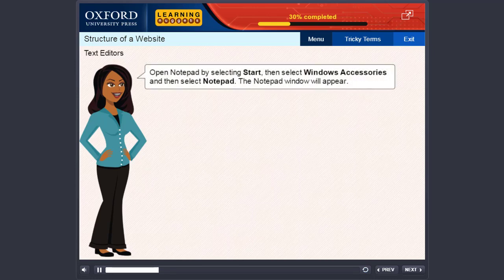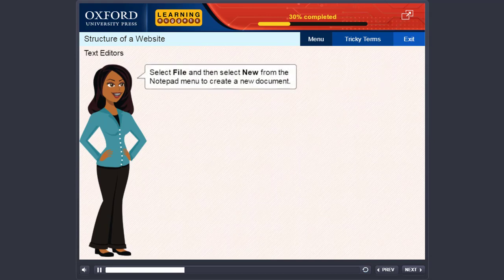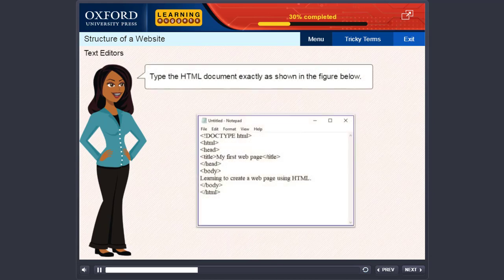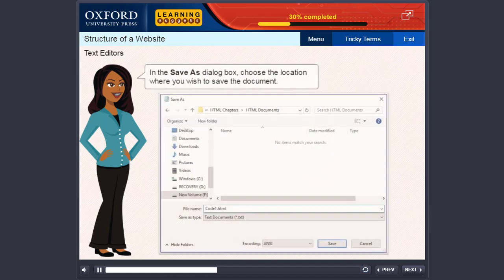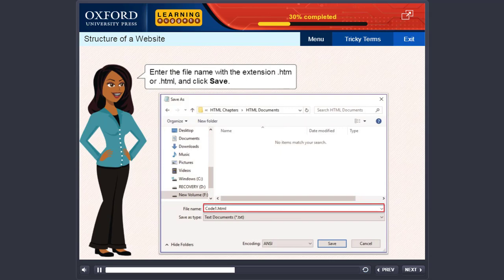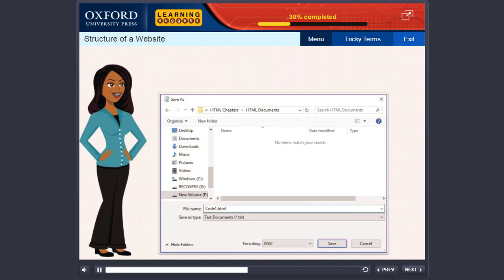Open Notepad by selecting Start, then select Windows Accessories and then select Notepad. The Notepad window will appear. Select File and then select New from the Notepad menu to create a new document. Type the HTML document exactly as shown in the figure below. Select File and then choose the option Save As. In the Save As dialog box, choose the location where you wish to save the document. Enter the file name with the extension .htm or .html and click Save.